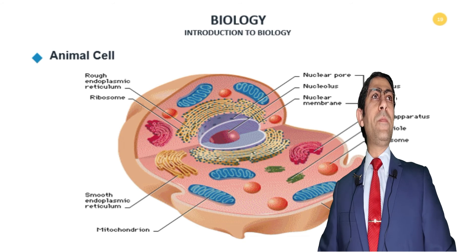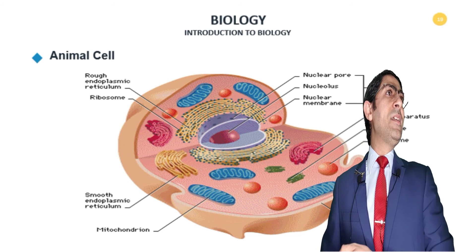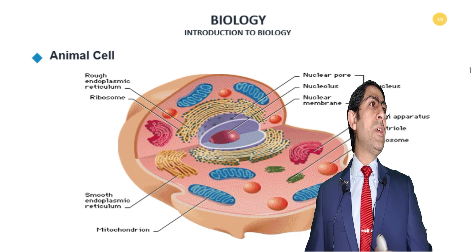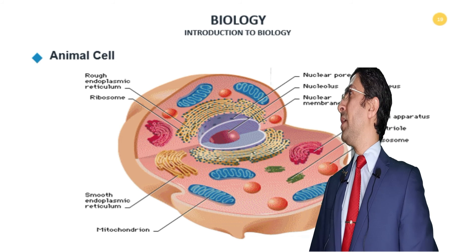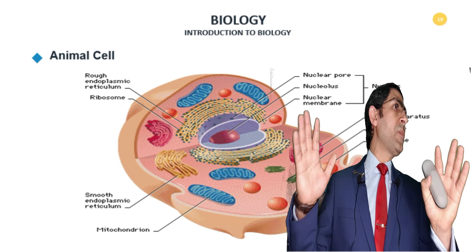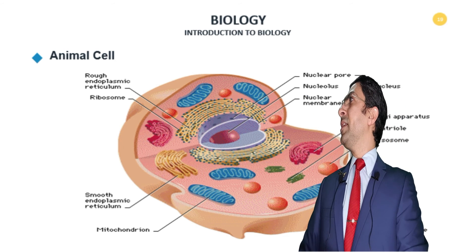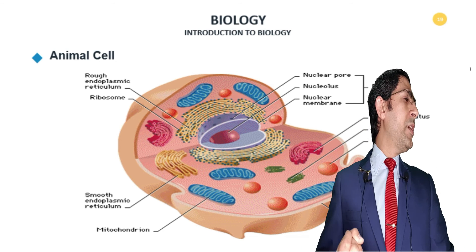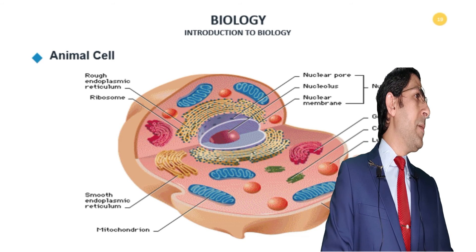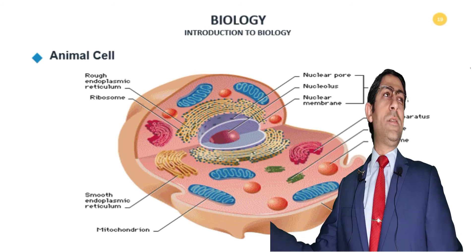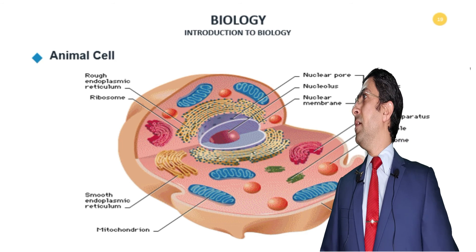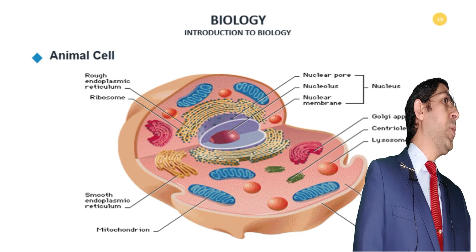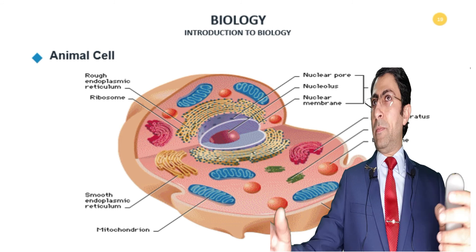The plant cell also has a cell surface membrane, but from the outside it has a cell wall. It has a nucleus with the same components as the animal cell. It has a very large central vacuole, mitochondria, Golgi apparatus, and all the rest of the components. It does not have centrioles. One of the most unique and distinguished features is that it has chloroplasts.